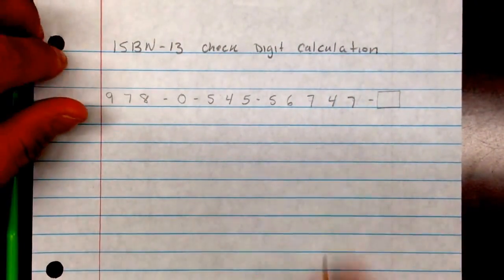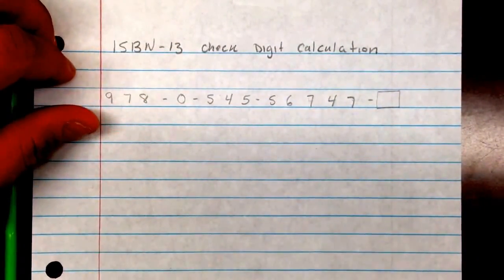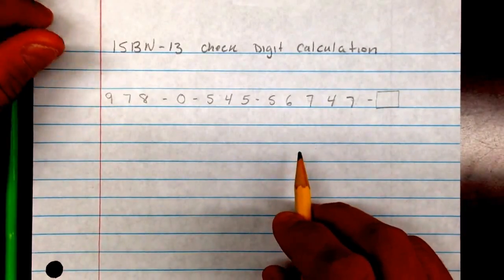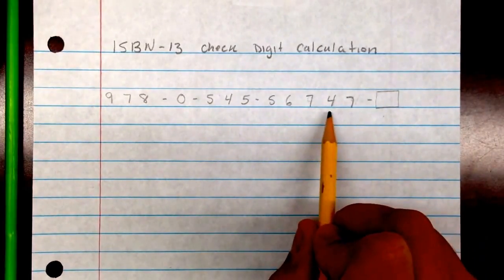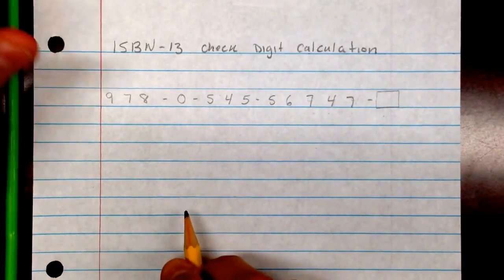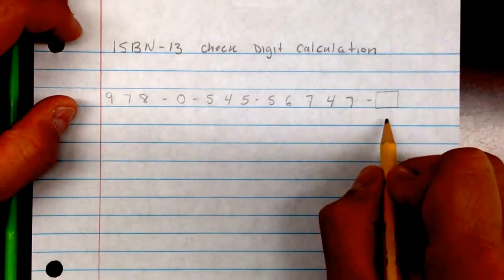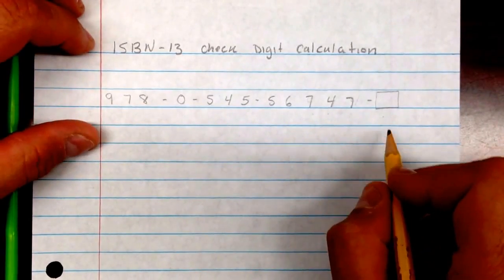The algorithm for this works like this: we start multiplying every other digit by 1, then 3, then 1, then 3. It's a lot like the UPC number, actually. So if you've done that or seen my other videos, it's a lot like that one.